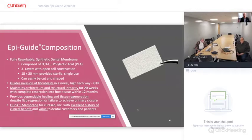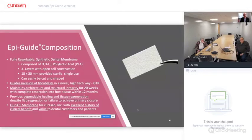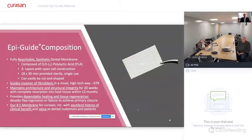EpiGuide provides dependable healing and tissue regeneration despite flap regression or failure to achieve primary closure. Certainly primary closure is needed and preferred, but we've seen evidence that its architecture can be helpful if you're not able to maintain that primary closure. As far as the importance to CuraSAN, EpiGuide is our number one membrane globally and has an excellent history of clinical benefit and value to our customers and the patients we serve.